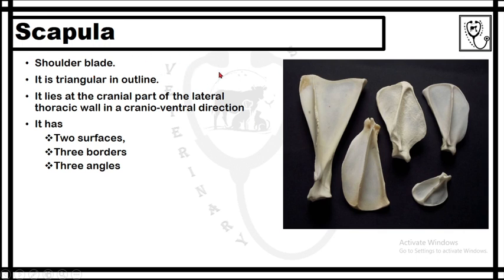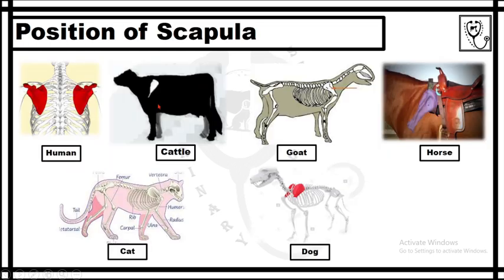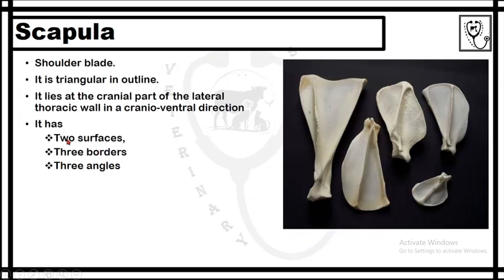It is a flat bone, and if you see the shape of the scapula bone it is triangular in outline. In different species of animals, the scapula lies at the cranial part of the thoracic wall, and the direction of the bone is cranioventral. The scapula bone has two surfaces, three borders, and three angles.